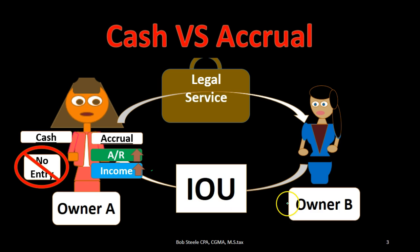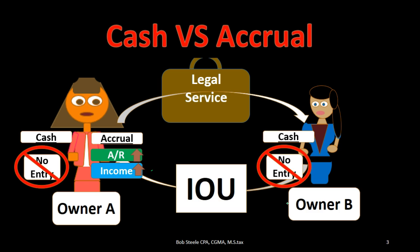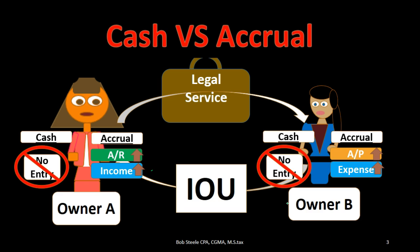On Owner B's side — the expense side — under the cash method nothing happened because no cash has exchanged hands. However, under the accrual method something really did happen: we owe the lawyer who gave us the legal counsel, accounts payable is going up, and the expense is going up. We are recognizing the expense when it was incurred — when we consumed the services — not when cash was going out.